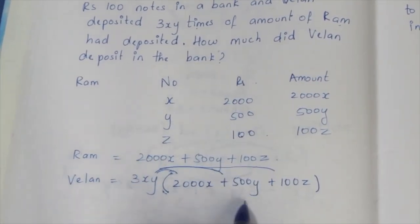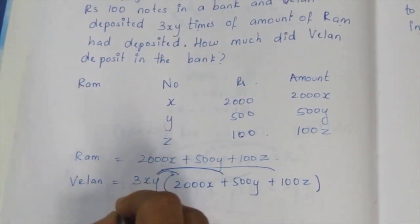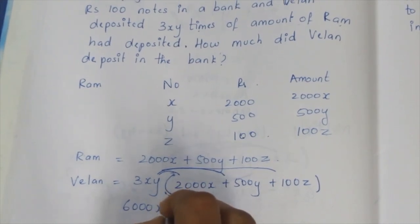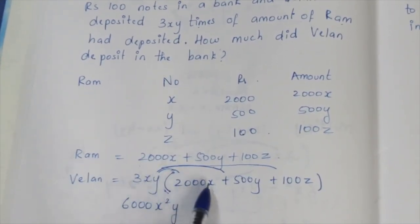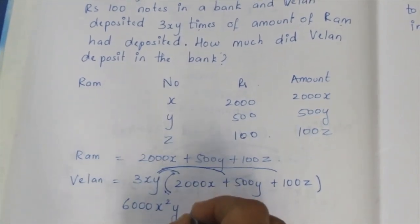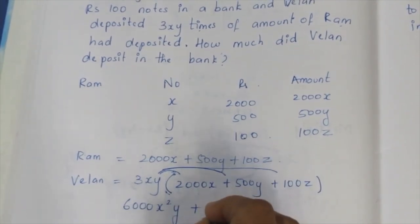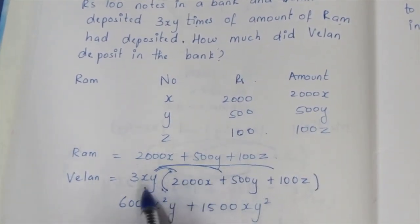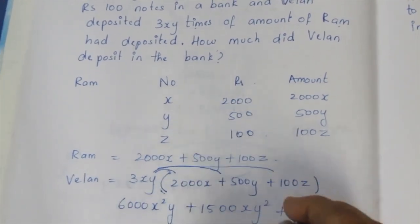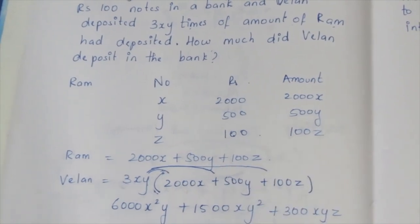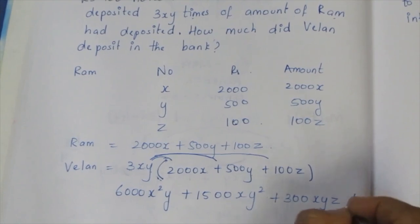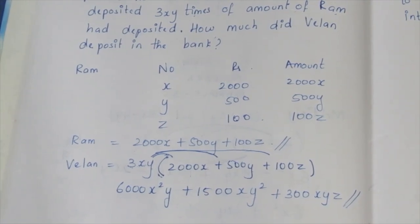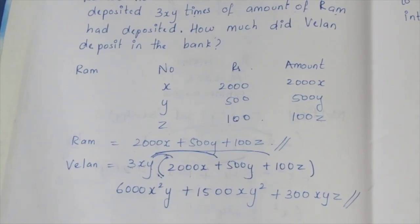Multiplying: 3 times 2000X gives 6000, with exponents 1 plus 1, so 6000X²Y. Then 3 times 500Y gives 1500XY². Then 3 times 100 is 300XYZ. So Valent's deposited amount is 6000X²Y plus 1500XY² plus 300XYZ. This is the same variable — that is the sum.